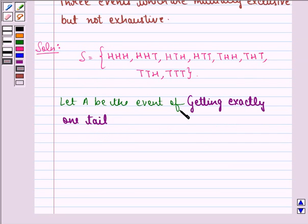Now let A be the event of getting exactly one tail. So the sample space for the event A will be HHT, HTH, THH because in all these elements we have just one tail. So this will be the sample space for event A.